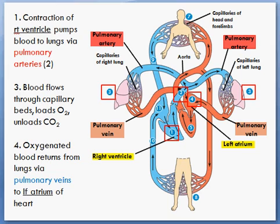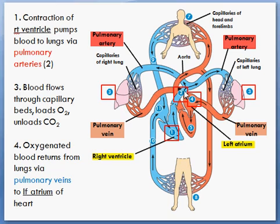There's a misconception that all arteries carry oxygenated blood and all veins carry deoxygenated blood — that is incorrect. It depends on the circuit. In the pulmonary circuit, deoxygenated blood is oxygenated. The pulmonary circuit goes from the right ventricle to the pulmonary arteries, to the capillary beds in the lungs where blood is oxygenated and CO2 is removed, then carried by the pulmonary veins into the left atrium.